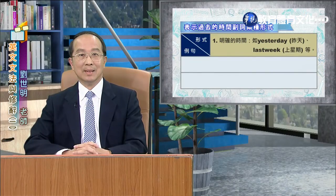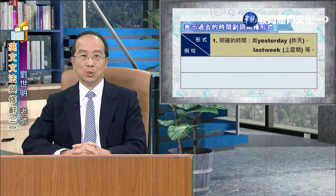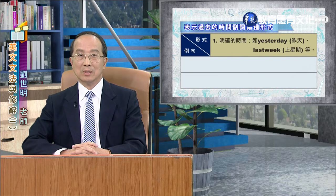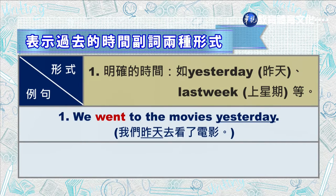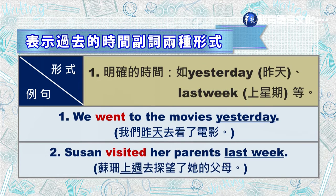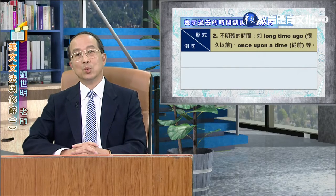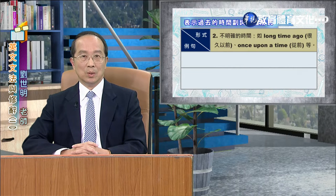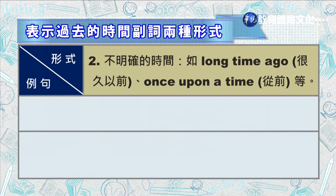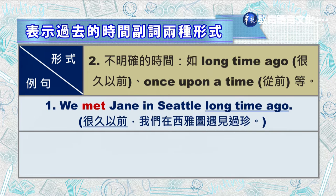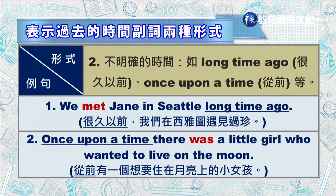接着看表示过去的时间副词的两种形式。第一，表示明确的时间，如 yesterday（昨天）、last week（上星期）等。例句一：We went to the movies yesterday，我们昨天去看了电影。例句二：Susan visited her parents last week，苏珊上周去探望了她的父母。第二，不明确的时间，例如 long time ago（很久以前）、once upon a time（从前）。例句：We met Gene in Seattle long time ago，很久以前我们在西雅图遇见过 Gene。Once upon a time there was a little girl who wanted to live on the moon，从前有一个想要住在月亮上的小女孩。